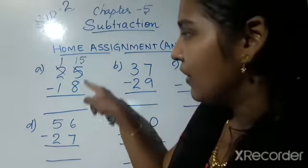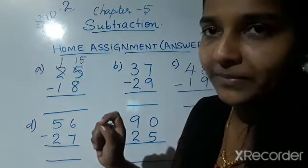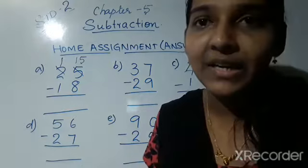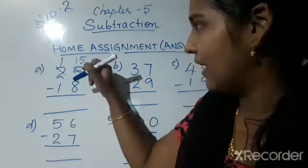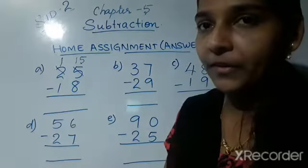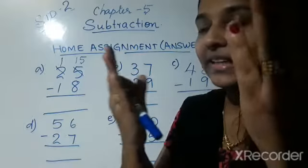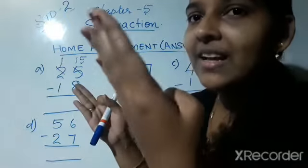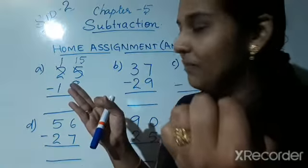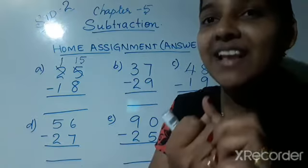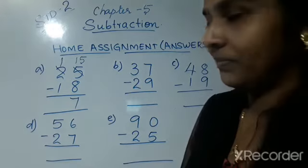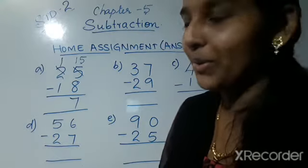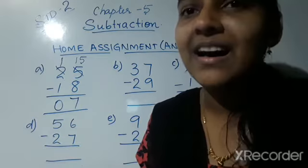Now you have to subtract 8 from 15 and 1 from 1. For 15 minus 8, you can do backward counting. Start before 15 and take the number 8 in your hand — count backwards: 14, 13, 12, 11, 10, 9, 8, 7. So 15 minus 8 is 7. Now 1 minus 1 is 0. So 7 is the answer for this question.